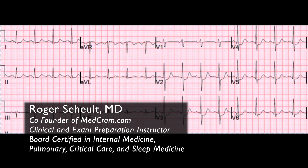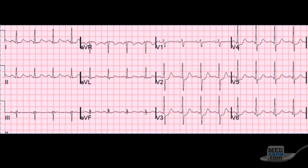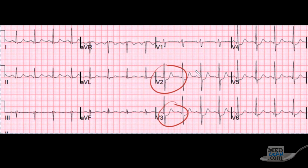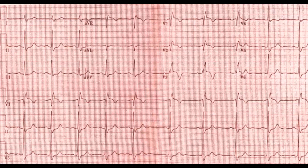Welcome to another MedCram lecture. We've got another EKG to go over. This is a patient that presents to the emergency room via ambulance for chest pain that's been going on for about 45 minutes. This is the EKG done in the field. You quickly review it and notice a report from the field of ST segment depression in the precordial leads. This was done about 10 minutes ago. The patient is quickly moved into another room and a new EKG is done.